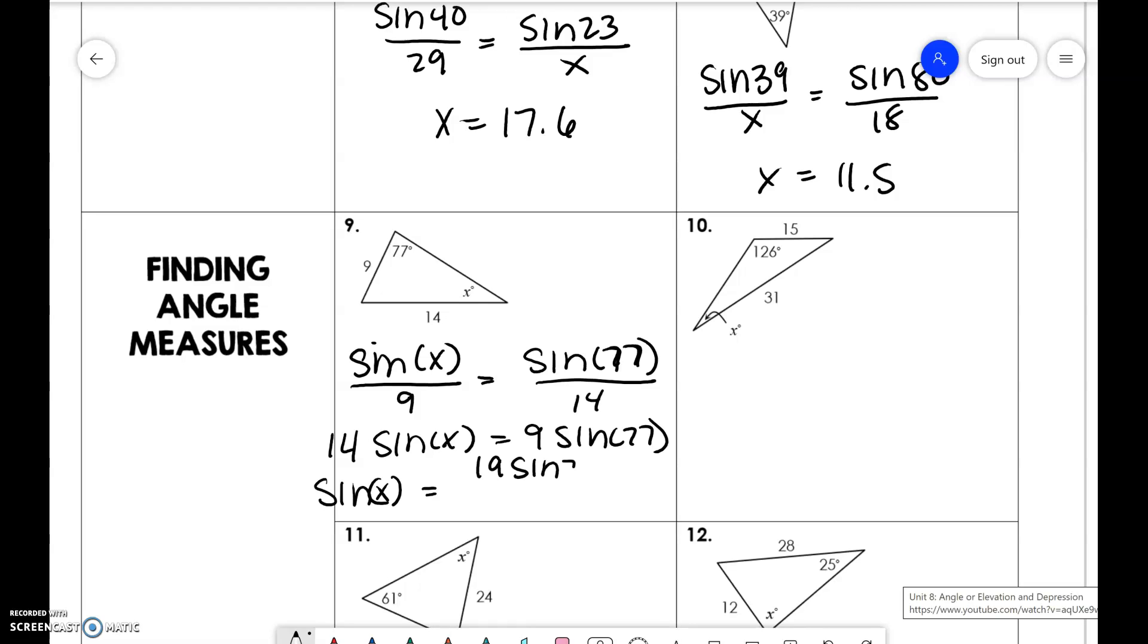So we need to do the sine inverse. But what I would do first is I would plug in your calculator, 9 times sine of 77 divided by 14, and then in my calculator I can do sine inverse and I go back up to that number and I re-enter it.